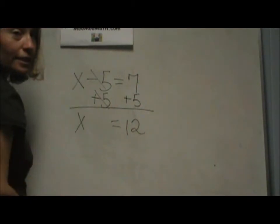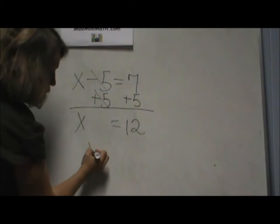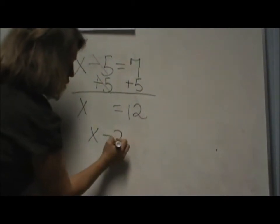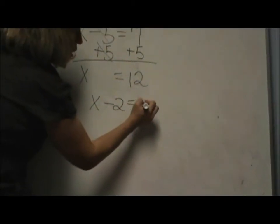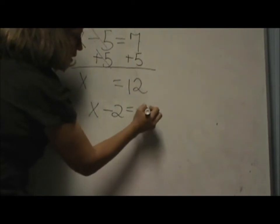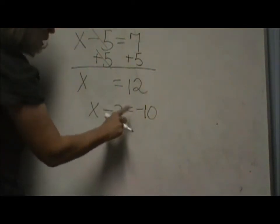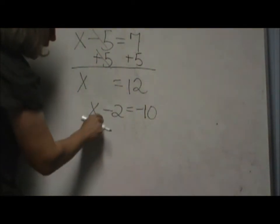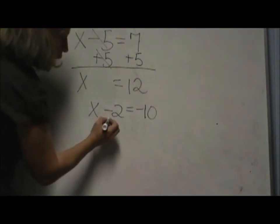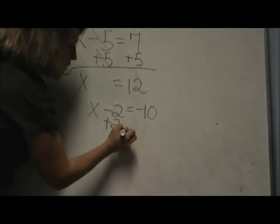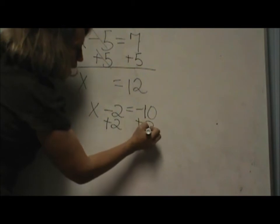You will often see this with different sign numbers. So I am going to change it to x minus 2 is equal to negative 10. For this problem I am going to undo to get the x by itself. I will add 2 to the left and I will add 2 to the right.